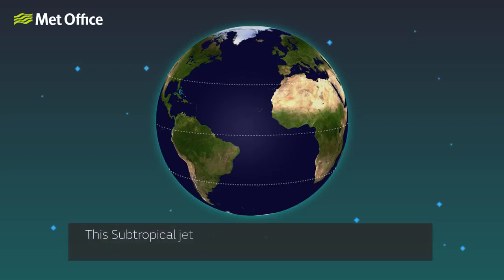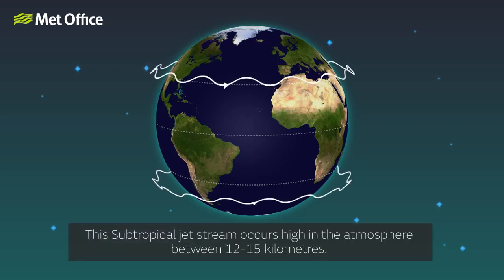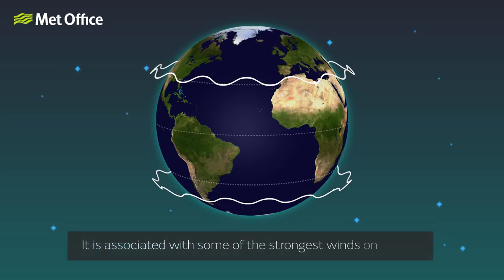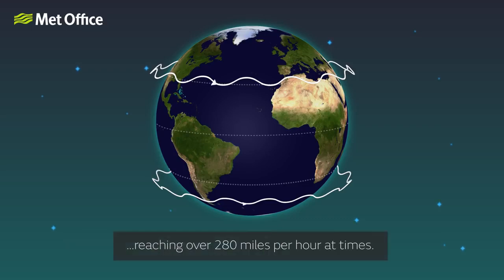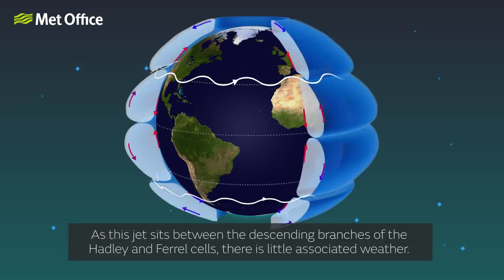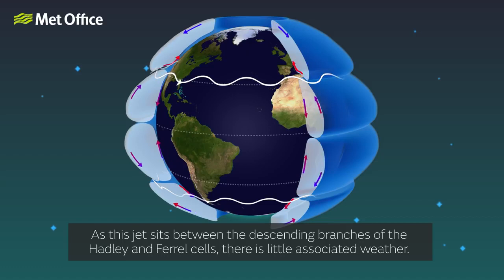This subtropical jet stream occurs high in the atmosphere between 12 to 15 kilometres. It is associated with some of the strongest winds on earth, reaching over 280 miles per hour at times. As this jet sits between the descending branches of the Hadley and Ferrell cells, there is little associated weather.